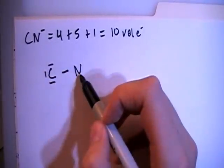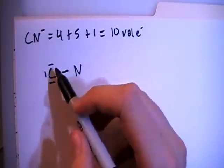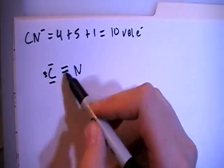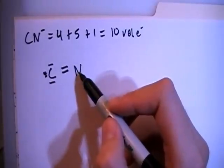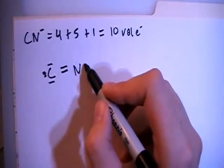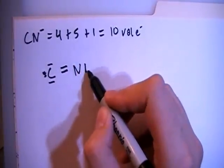And now, carbon has eight, but nitrogen only has two electrons, so we need to move over that pair of electrons. So now carbon still has eight, but nitrogen only has four. That's only eight, we still need ten, so let's go ahead and put on this extra pair over here.